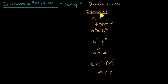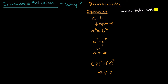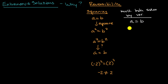Another non-reversible operation sometimes is multiplying both sides by a variable expression. For example, we know that if a is equal to b, and if we multiply both sides by a variable, that's still going to be true — x times a is going to be equal to x times b.